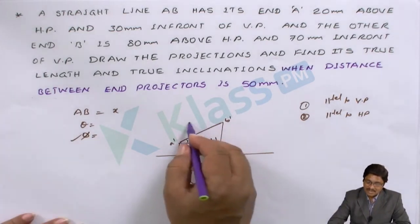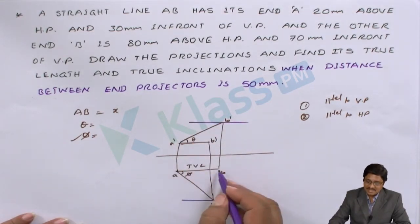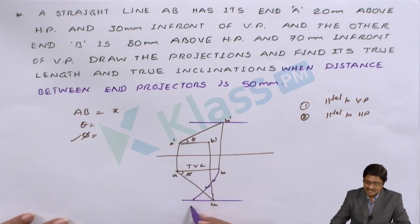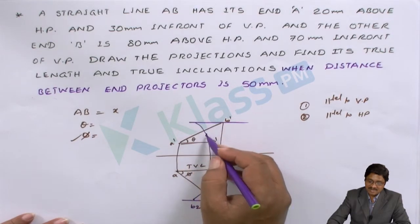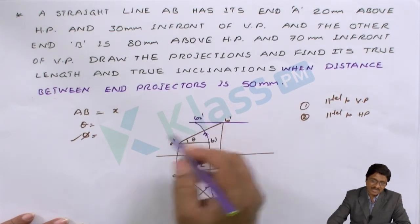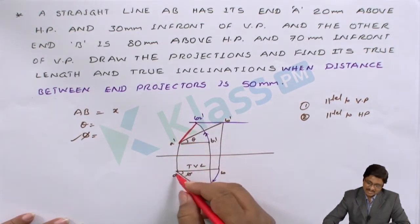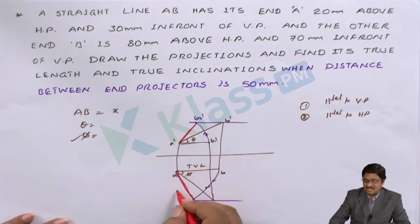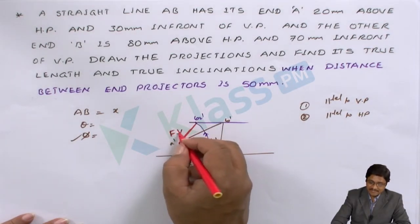We drew a locus line here and a locus line here. After that, with the compass — A as center, B as radius — we drew an arc. Where it meets, we say there is B2. A dash as center, B dash as the radius — I drew the arc — where it reached, I called it B2 dash. Once getting those points, I connected A dash to B2 dash, and A to B. This gives the top view and front view respectively.